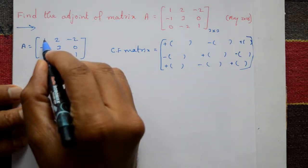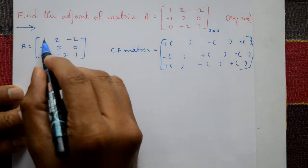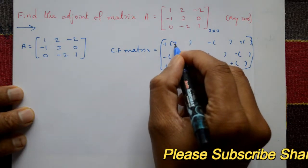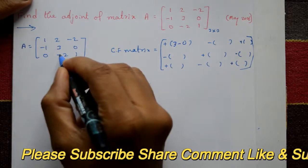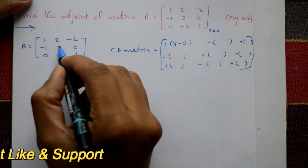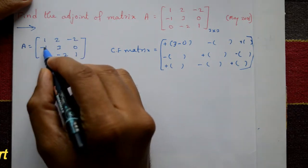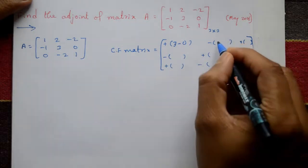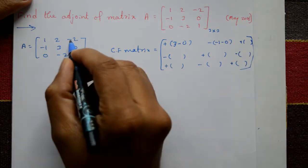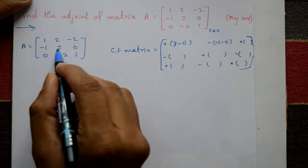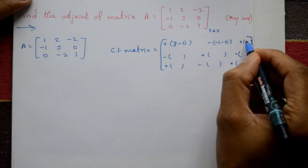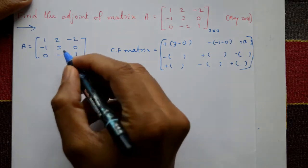Now cofactor of 1: multiply remaining elements — 3 into 1 is 3, minus sign, 2 into 0 is 0. Next, cofactor of 2: minus 1 into 1 is minus 1, and 0 into 0 is 0, minus sign gives minus 1. Cofactor of minus 2: multiply remaining — minus 1 into minus 2 is 2, and this multiply is 0.